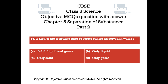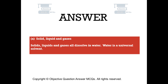Question number 15. Which of the following kinds of solute can be dissolved in water? Option A, Solid, liquid, and gases. Option B, Only liquid. Option C, Only solid. Option D, Only gases. The right answer is Option A — Solid, liquid, and gases. Solids, liquids, and gases all dissolve in water. Water is a universal solvent.